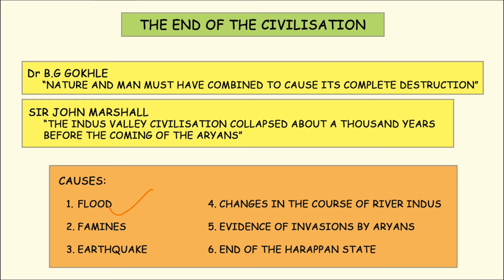Excavations done at Mohenjo-daro and Chanhu-daro reveal that these two cities were flooded more than once. A hydrologist named Rex put forth a theory stating that a tectonic activity — the movement of the Earth's lithosphere — occurred in the Harappan region. Due to this tectonic activity, the flood plains of the Indus River were raised, which led to the submergence of cities such as Mohenjo-daro, thus resulting in the burying of those cities.